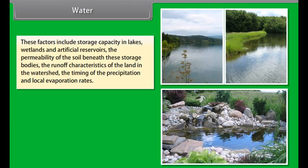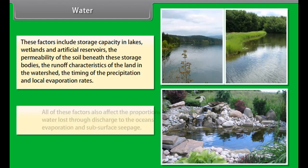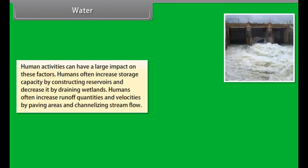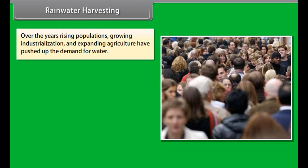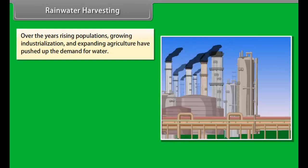Water is one of the basic necessities of all life forms and is the greatest gift of nature to us. Water is naturally replenished by precipitation and naturally lost through discharge to the oceans, evaporation and subsurface seepage. Although the only natural input to any surface water system is precipitation within its watershed, the total quantity of water in that system at any given time is also dependent on many other factors.